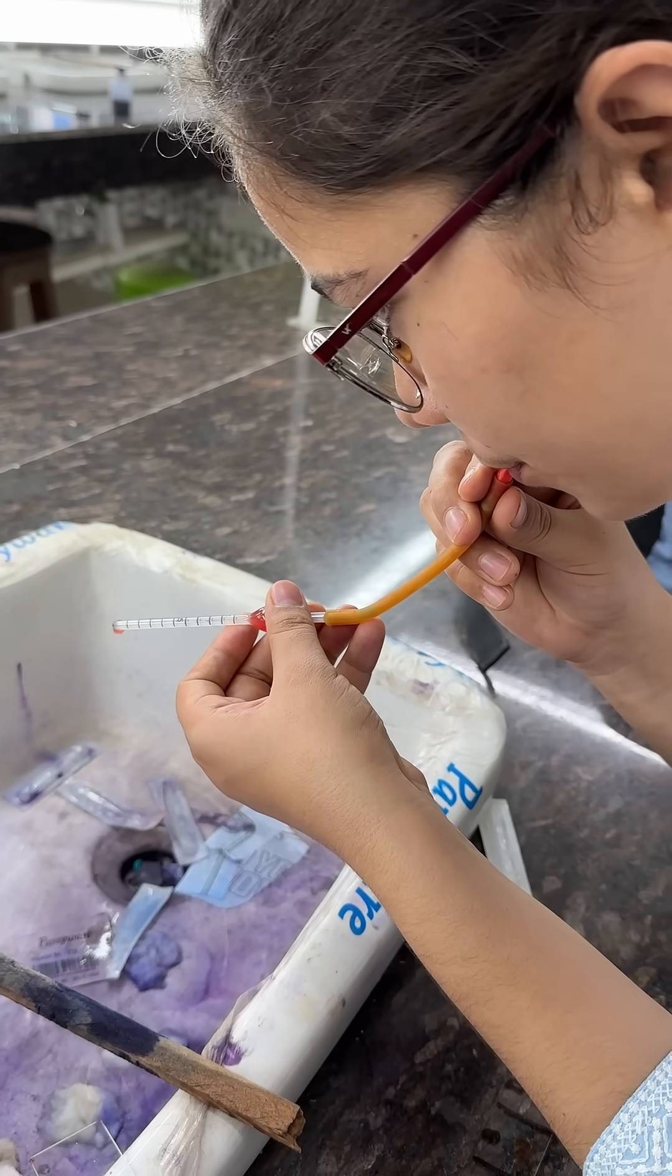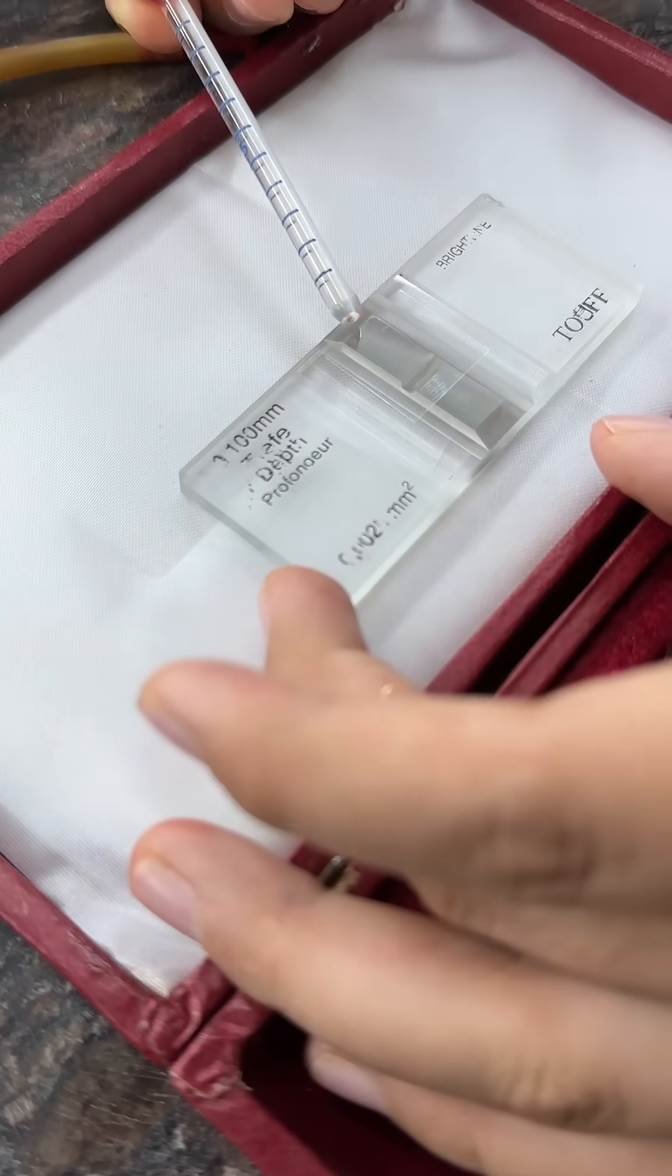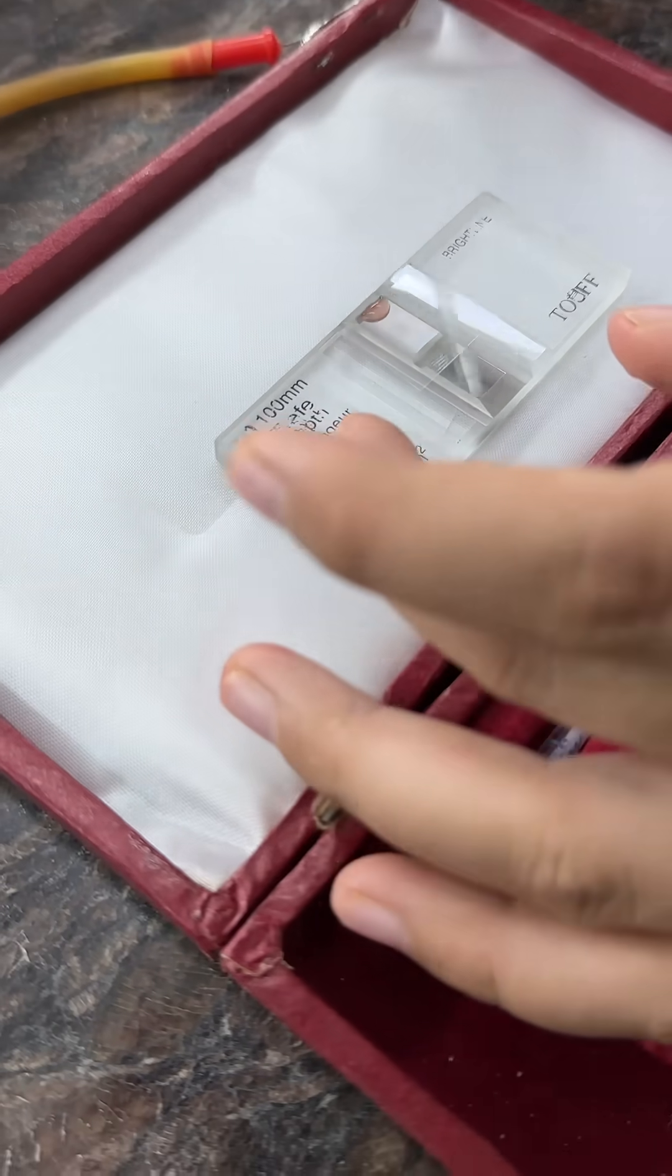Discard two drops of fluid. Now put a small drop of fluid at edge of cover slip. It will be drawn by capillary action, and then wait for five minutes.